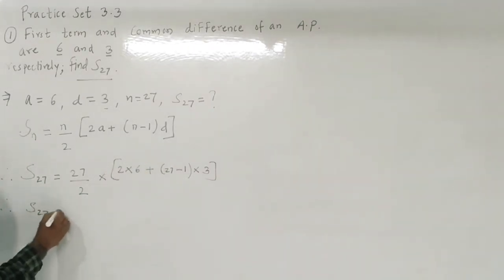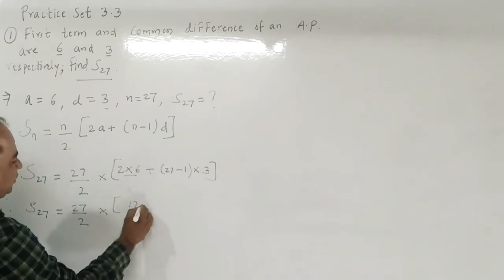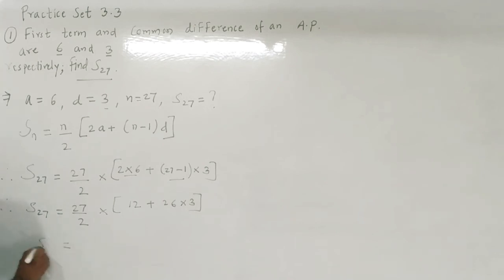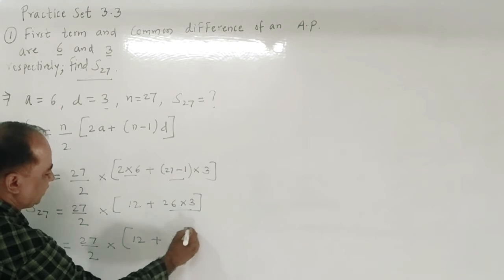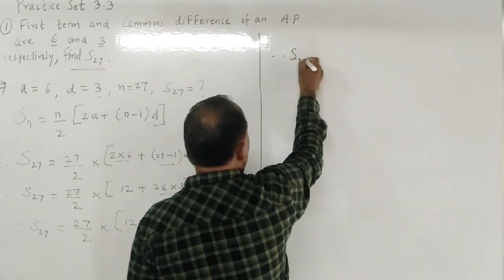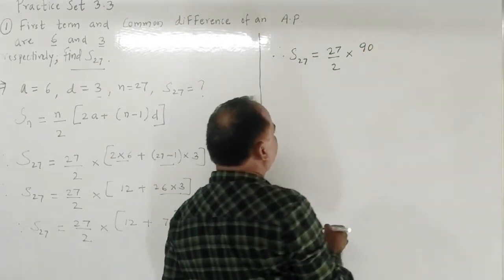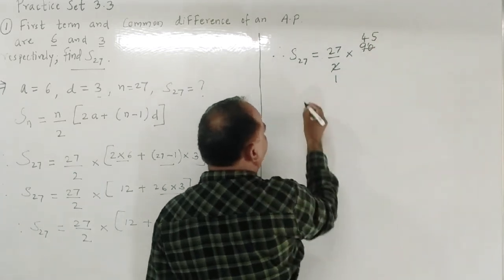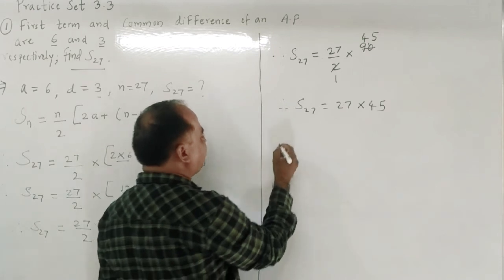Therefore S27 = 27/2 × (12 + 26×3) = 27/2 × (12 + 78) = 27/2 × 90. Dividing 90 by 2 gives 45, so S27 = 27 × 45.